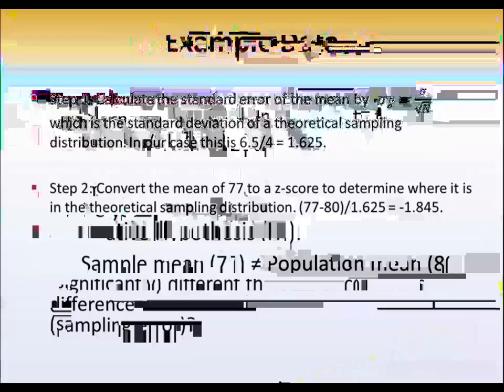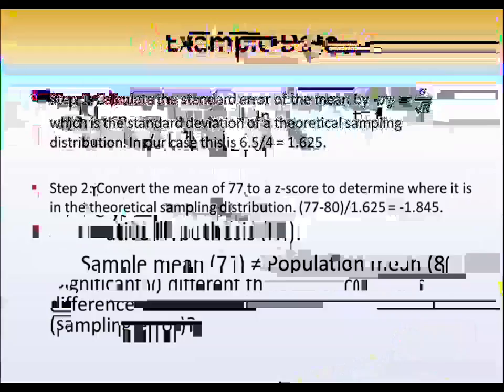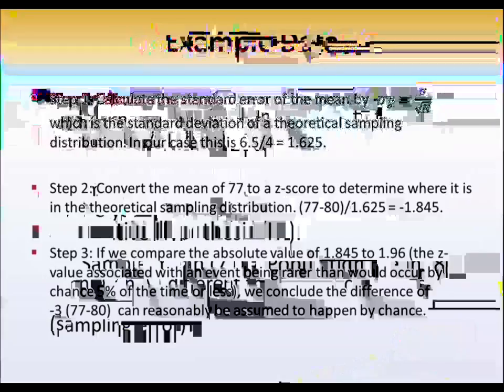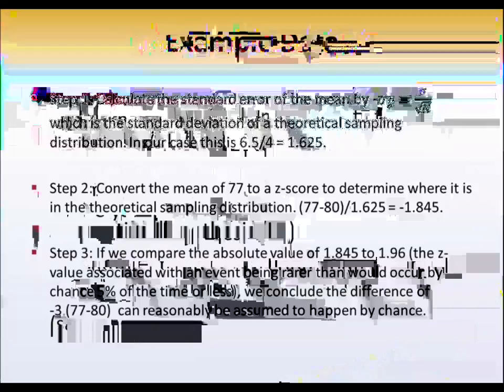Now here's an illustration similar to the one that you saw in the previous video. Notice that the values are slightly different now. The hypothesized mean was 80. What about this 77? Is this 77 so far out in the distribution that we have to conclude the real mean isn't 80? It's something different.